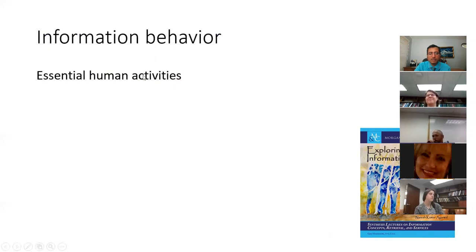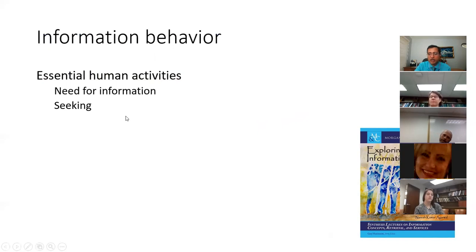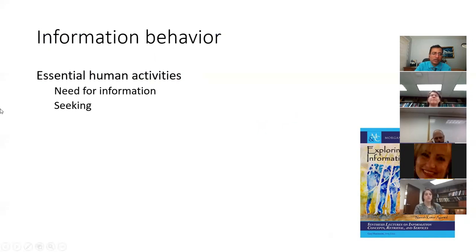Information Behavior can be seen as essential human activities, which includes the need for information and how we go about seeking information when that need arises. Donald Case had a very famous book called Looking for Information, now in its fourth edition with Lisa Given. The concern of that book has been about looking for information, and information seeking has been one of the key areas of activity within information behavior.